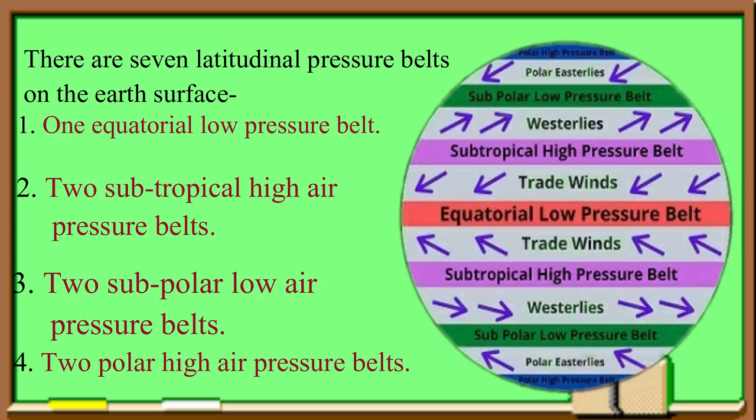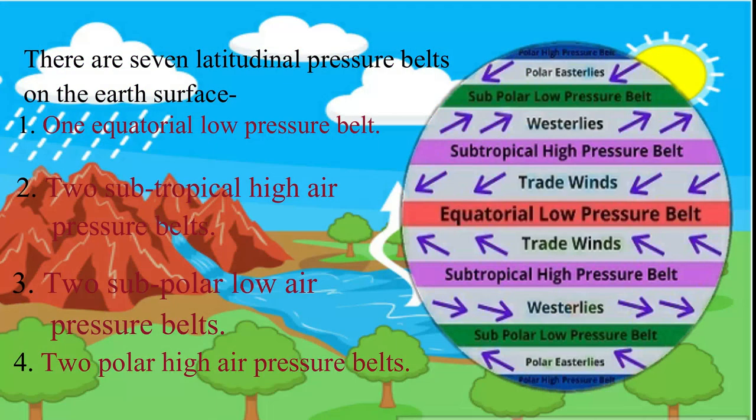This pattern exists because the earth's spherical shape means that different parts of the earth do not receive equal heating, so sunrays do not reach every place equally.